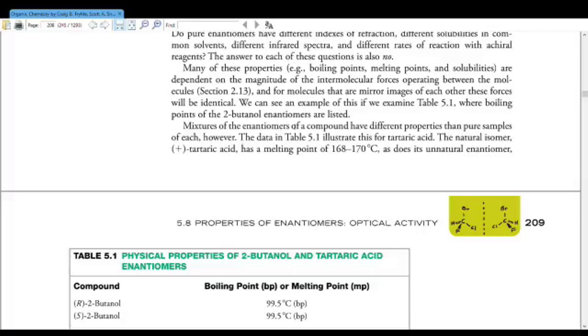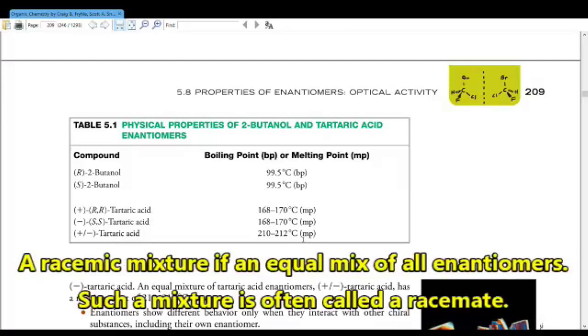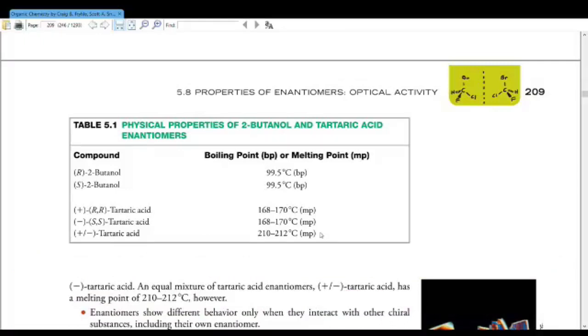Now, mixtures of the enantiomers of a compound have different properties than pure samples of each, however. The data in table 5.1 illustrates this for tartaric acid. So tartaric acid, one enantiomer, has a melting point of 168 to 170°C, so does the other one. However, a mixture, a 50-50 mixture of both enantiomers, called a racemic mixture, R-A-C-E-M-I-C, has a different melting point. So that is important to remember. Don't expect your pure enantiomer to necessarily have the exact same physical properties as your racemic mixture.